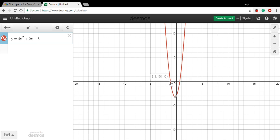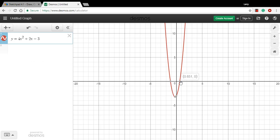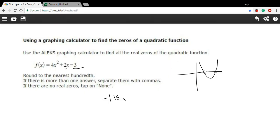So we got negative 1.151. And our problem says to go to the nearest hundredth. So negative 1.15 is good enough. And we've got 0.65. Okay. So we'll put a comma here and 0.65. So those are the zeros of this quadratic function.